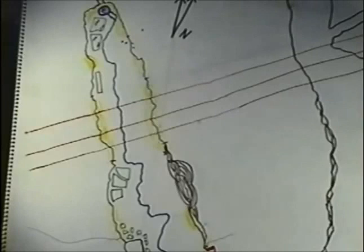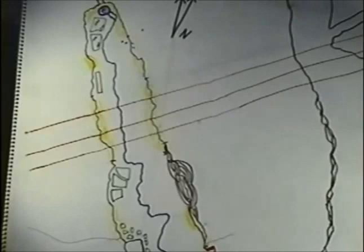I believe the lost tomb entrance is right here, and I believe that it runs in an easterly direction back over this way towards the R2 ravine.